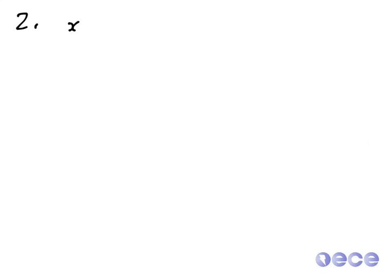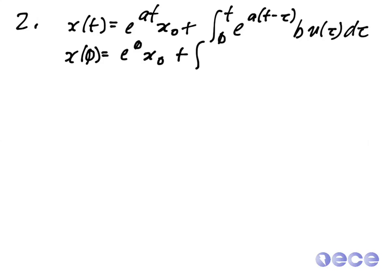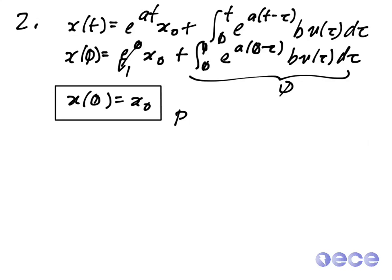Now let's move on to point two. For point two, we have to show that the initial conditions are satisfied. Starting from X of T equal to E to the AT times X zero plus the integral from zero to T of E to the A of T minus tau times B U of tau D tau, we evaluate at T equals zero. So X of zero equals E to the zero times X zero plus the integral from zero to zero — which is zero — of E to the A of zero minus tau times B U of tau D tau. E to the zero is one, and the integral from zero to zero is zero, so X of zero equals X zero. This shows point two.